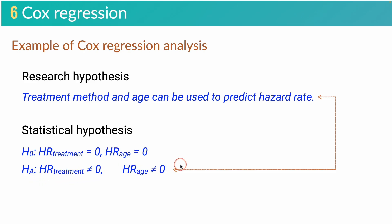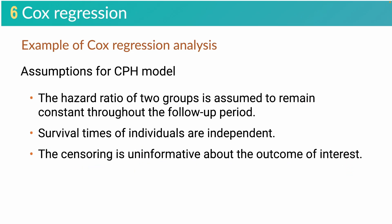Cox regression is performed with several assumptions. The first assumption is that the hazard ratio of two groups remains constant throughout the follow-up period. The second assumption is that the survival times of individuals are independent — meaning the survival time of one patient does not depend on the survival time of another. The third assumption is that censoring is uninformative about the outcome of interest. This is satisfied when there is no relationship between the probability of censoring and the event of interest. For example, in clinical trials, we should carefully assess that loss to follow-up does not depend on the patient's health.